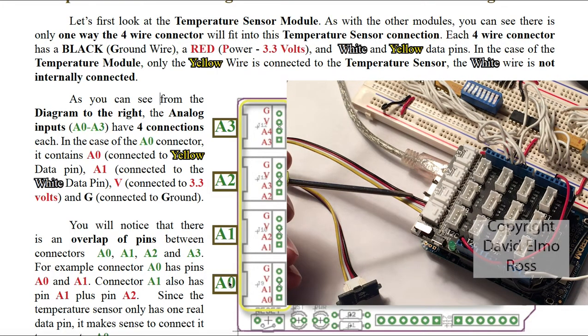We've connected our temperature sensor to our A0 connector on our Grove shield. Notice black is here, which is ground, V is red, which is 3.3 volts, white is not connected, and yellow is connected to our temperature sensor on this pin.